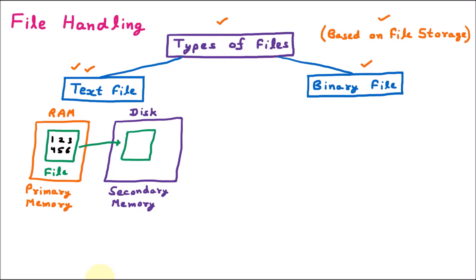The file content is 1, 2, 3, 4, 5, 6. When the file was in RAM it needed three bytes for storage. But when the file moves to secondary memory in a text file, every single numeric character takes one byte. So 1, 2, 3, 4, 5, 6 each consume one byte, meaning this file is now six bytes on disk.